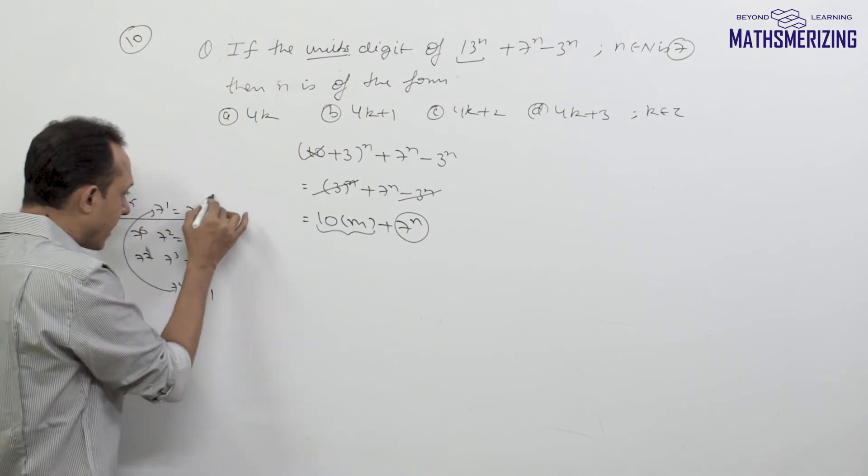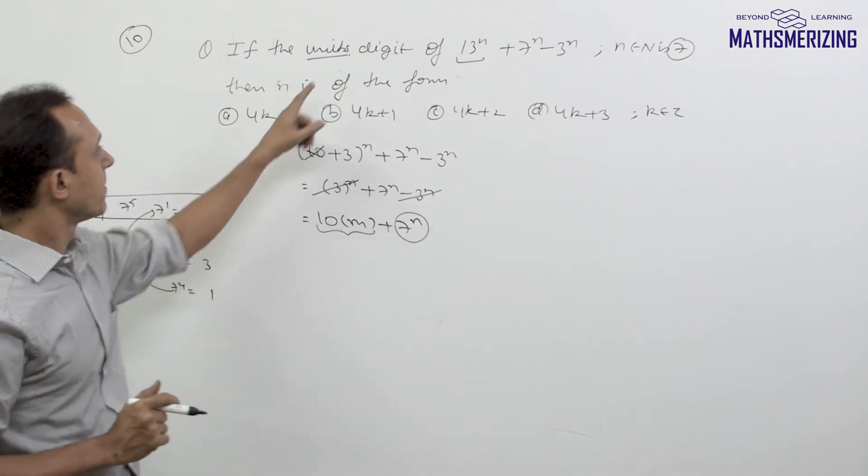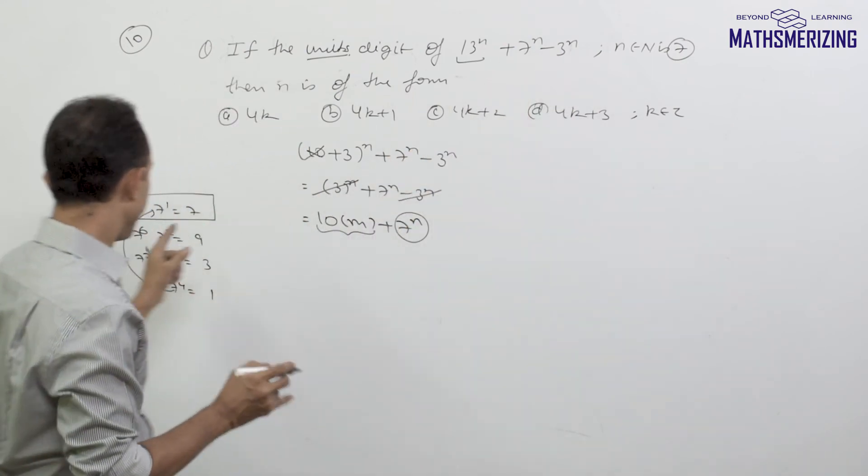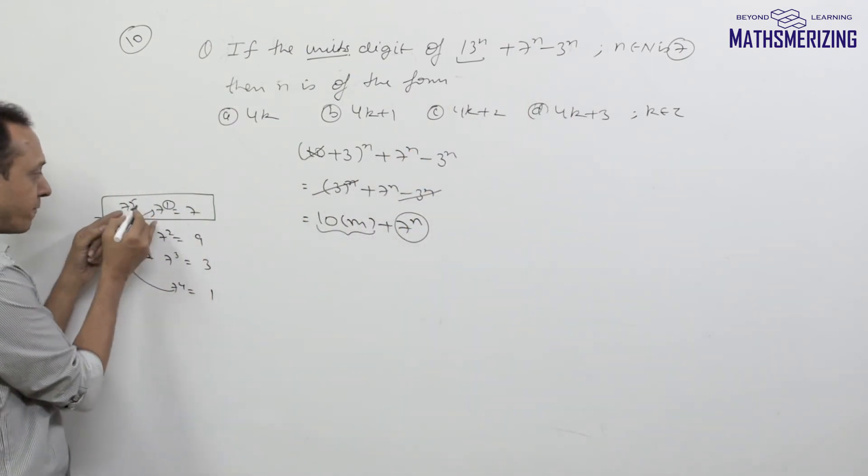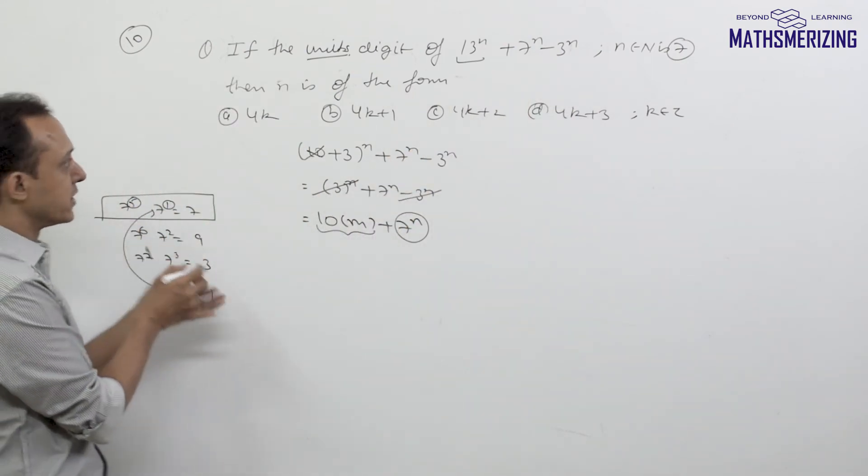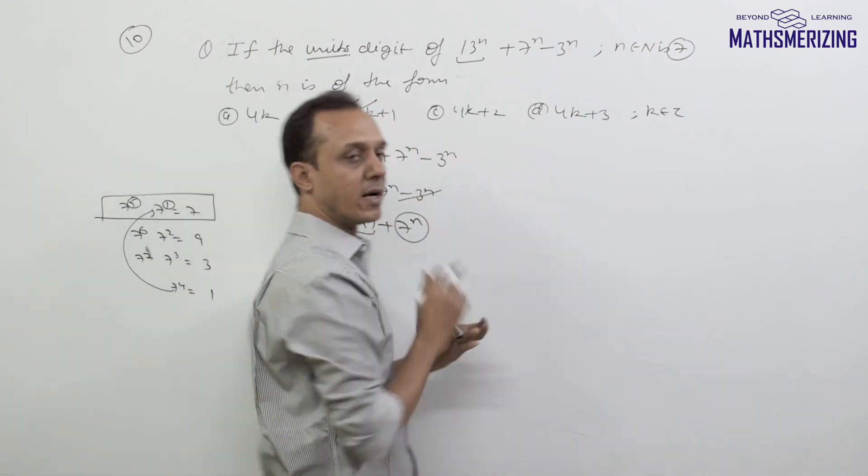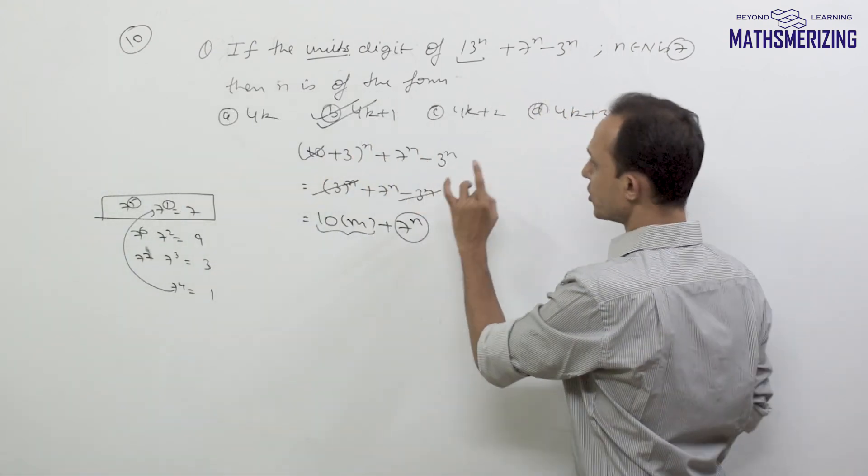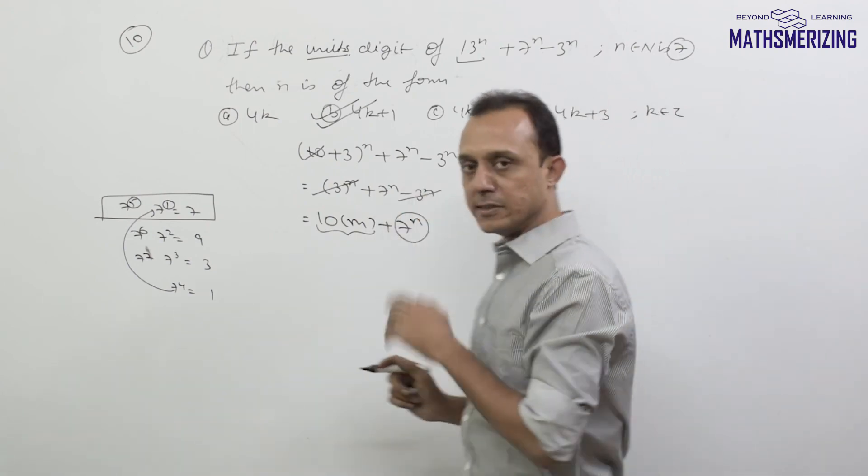If the units place for this number is 7, then n should be of the form 1, 5, which is 4k + 1. So the answer to this question will be n should be of the form 4k + 1 where k is an integer.